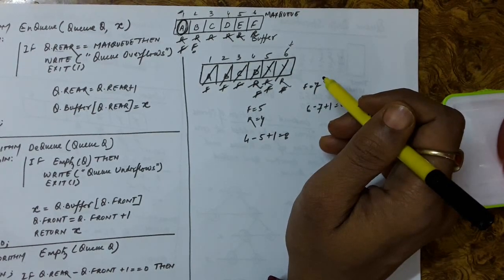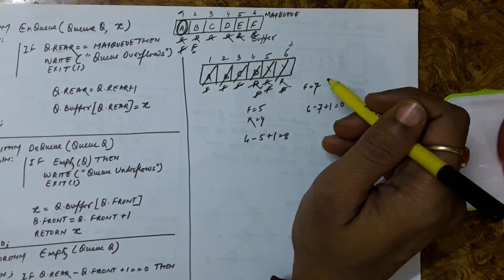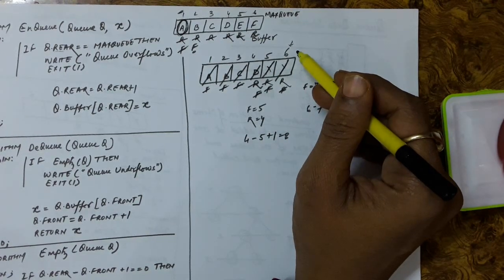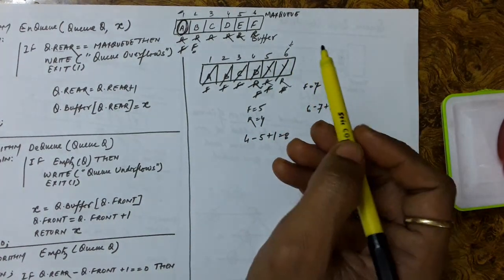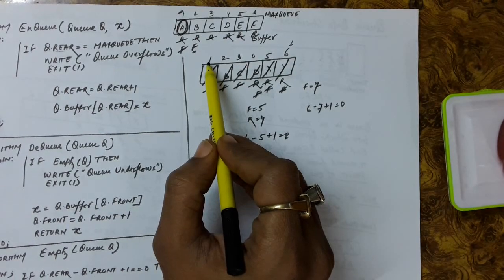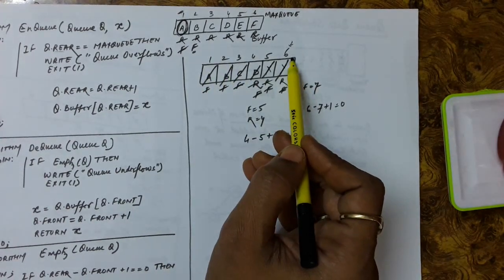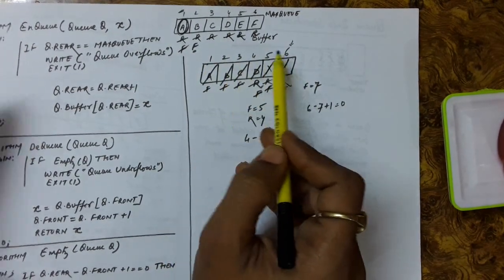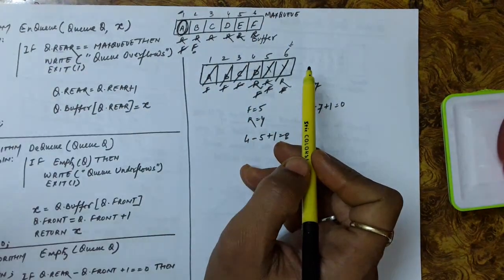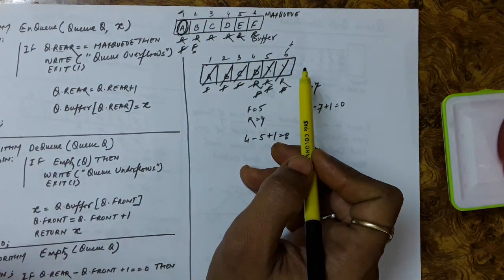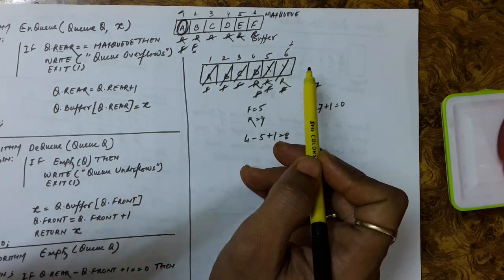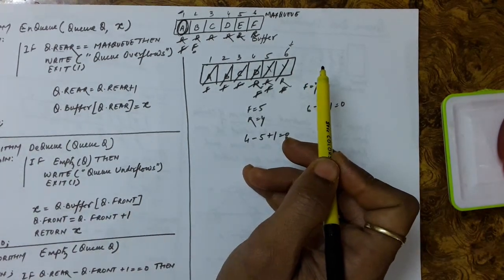This is actually the limitation of the linear queue. The solution is: if rear has reached the maximum position, bring it back to position 1 and insert there — treating it as circular. So the linear queue has limitations that can be covered up by the circular queue. Thank you.